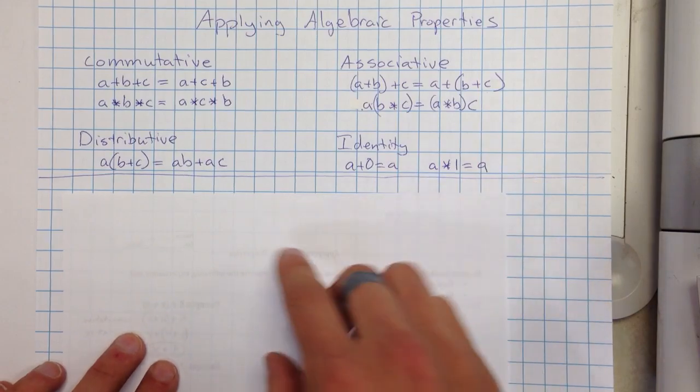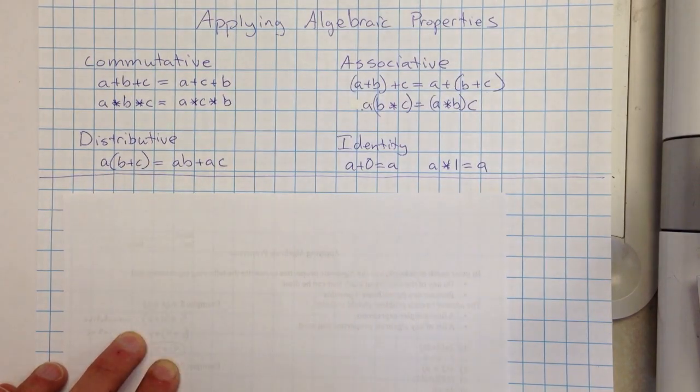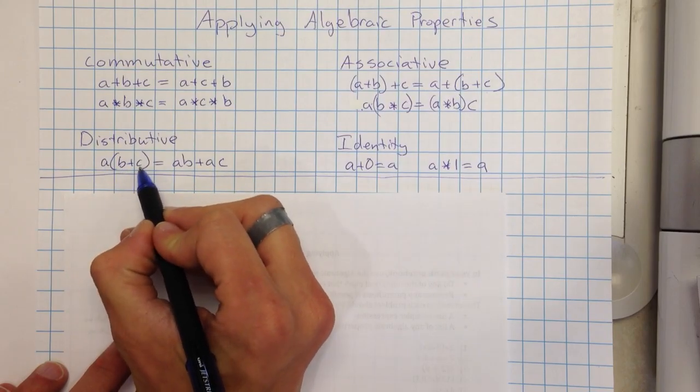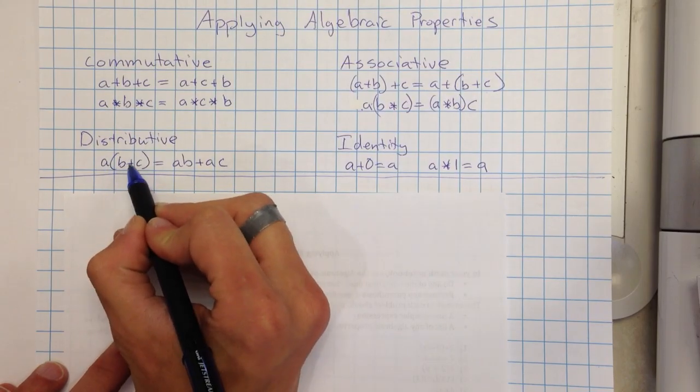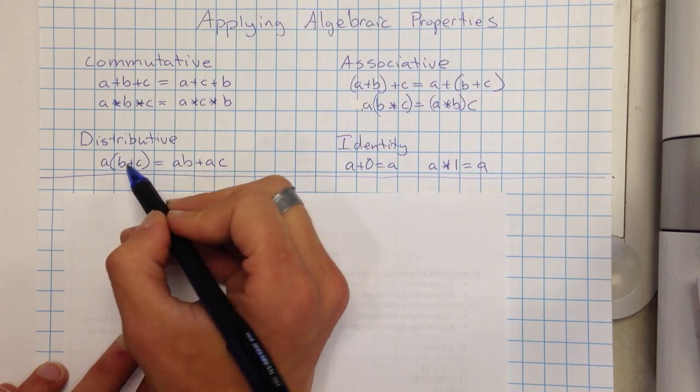We also have distributive. So with distributive, we could have A times parentheses B plus C. I could rewrite that by distributing the A to the B and the C. So A times B, keep the operation the same, equals A times C. This also works for subtraction.